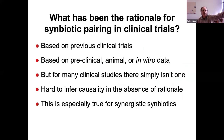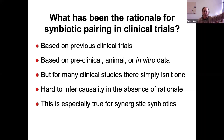So what has been the rationale for symbiotic pairing in clinical trials? I've made the point that there hasn't been much rationale in supplements, but what about for clinical trials? A reasonable rationale is if the probiotic or the prebiotic has been used in a previous clinical trial with efficacy — that's a reasonable rationale. Even preclinical animal or in vitro data would provide a reasonable rationale. Unfortunately for many clinical studies — and I've read through perhaps a hundred or more reports in the clinical trial literature — there just isn't one stated, and that makes it really hard to infer any kind of causality.